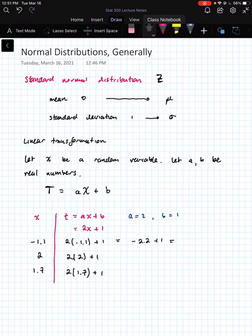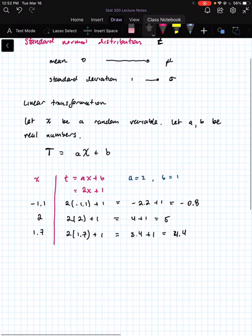So we've got negative 2.2 plus one, which is negative 0.8. 2 times 2 is 4, plus 1 gives us 5. And 2 times 1.7 is 3.4 plus 1, and that's 4.4.